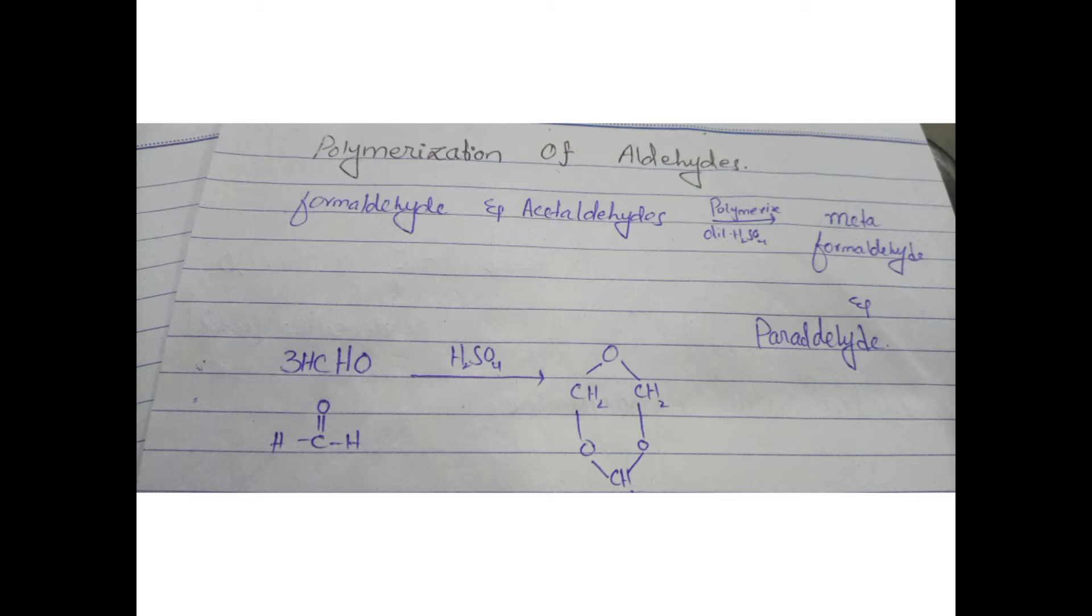Formaldehyde and acetaldehyde polymerize in the presence of sulfuric acid. When they catalyze this reaction, the formation of meta formaldehyde and para aldehyde occurs. So let's start the topic.